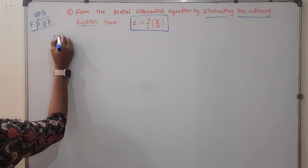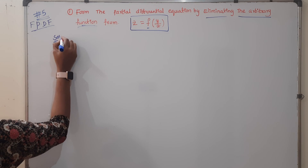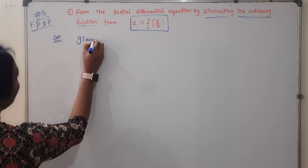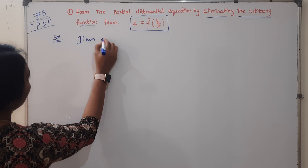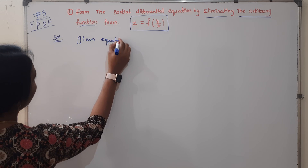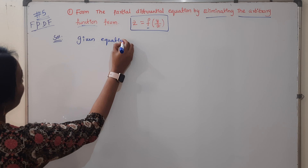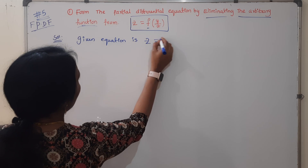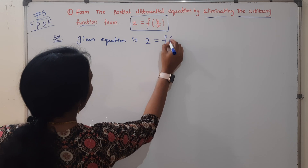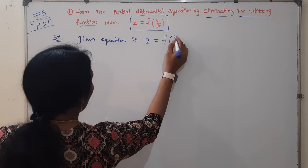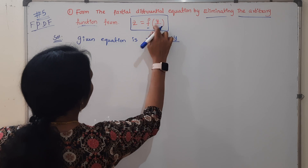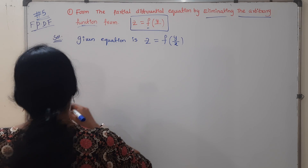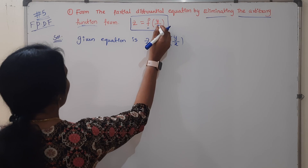Very simple and very easy, no need to worry. What is the given equation here? Given that Z is equal to f of y upon x — that is, z = f(y/x).